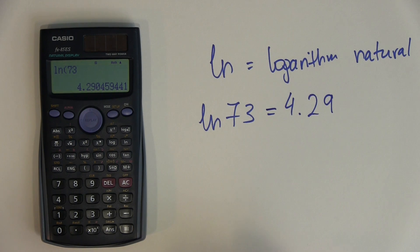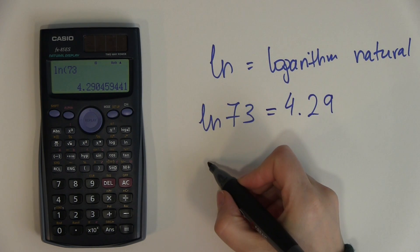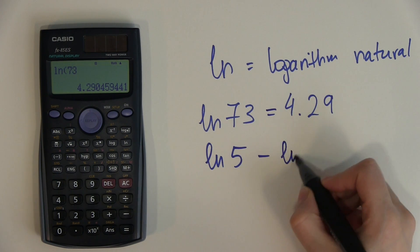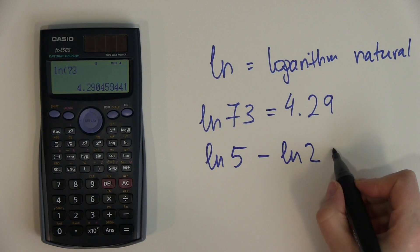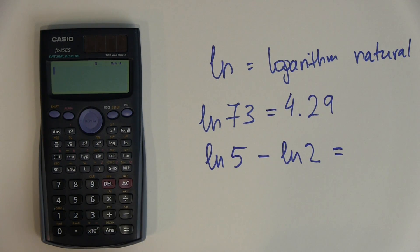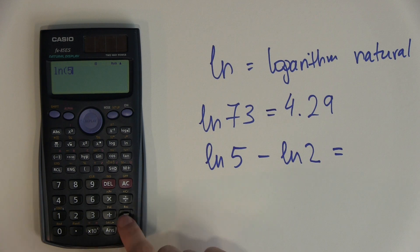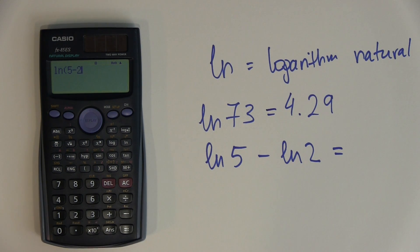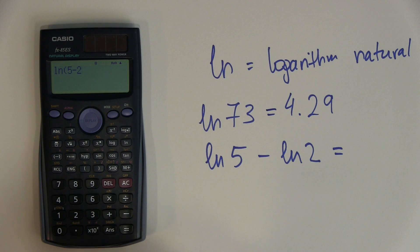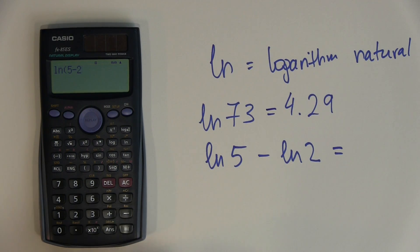Now, what if I wanted to calculate LN 5 minus LN 2? I clear the screen and press LN 5. If I just keep typing minus 2, I'm telling the calculator to calculate the logarithm of the difference between 5 minus 2 — that's not what I want.